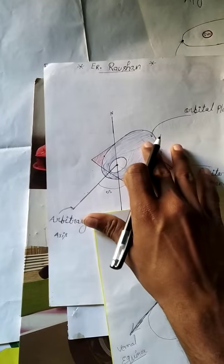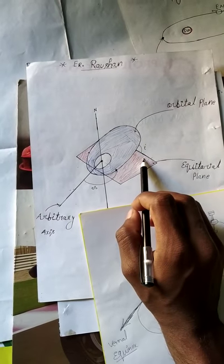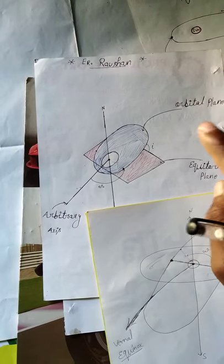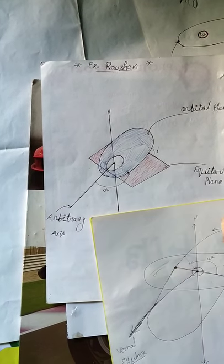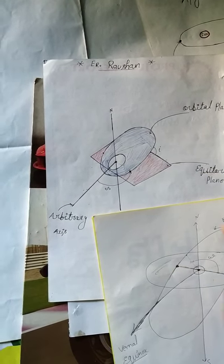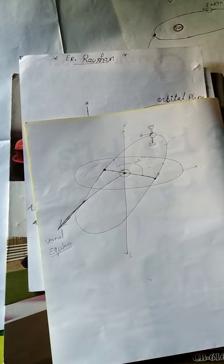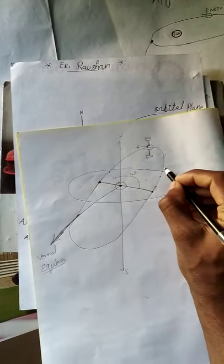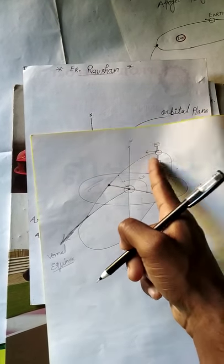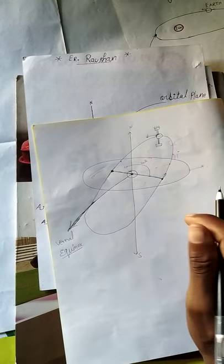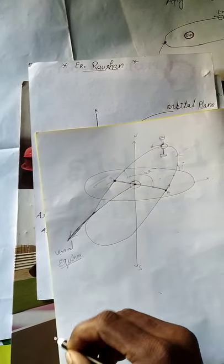In the 3D diagram, the orbital plane and equatorial plane are inclined at an angle i. This is known as the inclination angle — i is the inclination angle and is measured in degrees. This shows the orbital-to-equatorial plane inclination. This is the ascending node and this is the descending node.